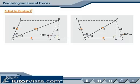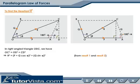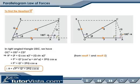To find the magnitude of resultant R, applying the Pythagoras theorem to right angle triangle ODC, we get OC squared equals OD squared plus CD squared. This implies R squared equals (P plus Q cos alpha) squared plus (Q sin alpha) squared, substituting for OD and CD. Therefore, R equals the square root of P squared plus Q squared plus 2PQ cos alpha. This gives the magnitude of the resultant R.